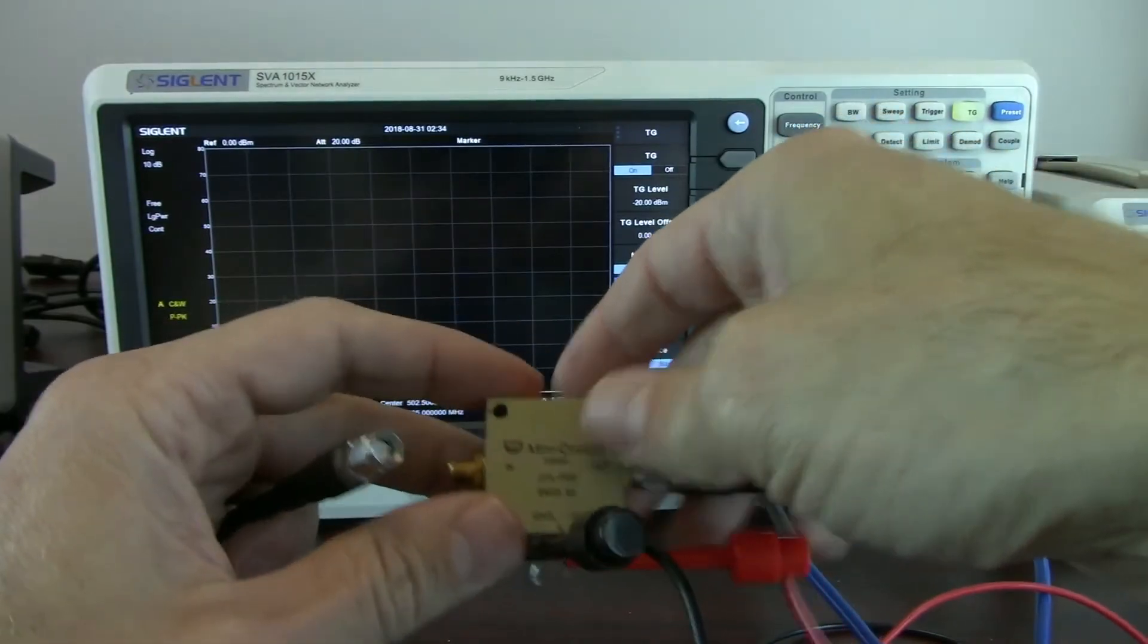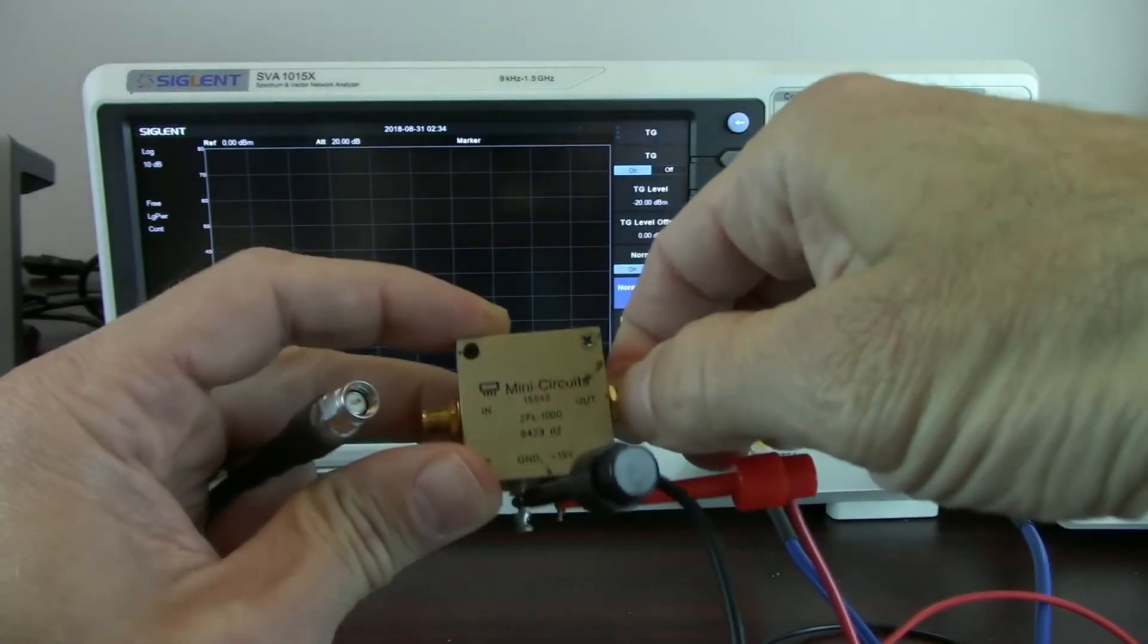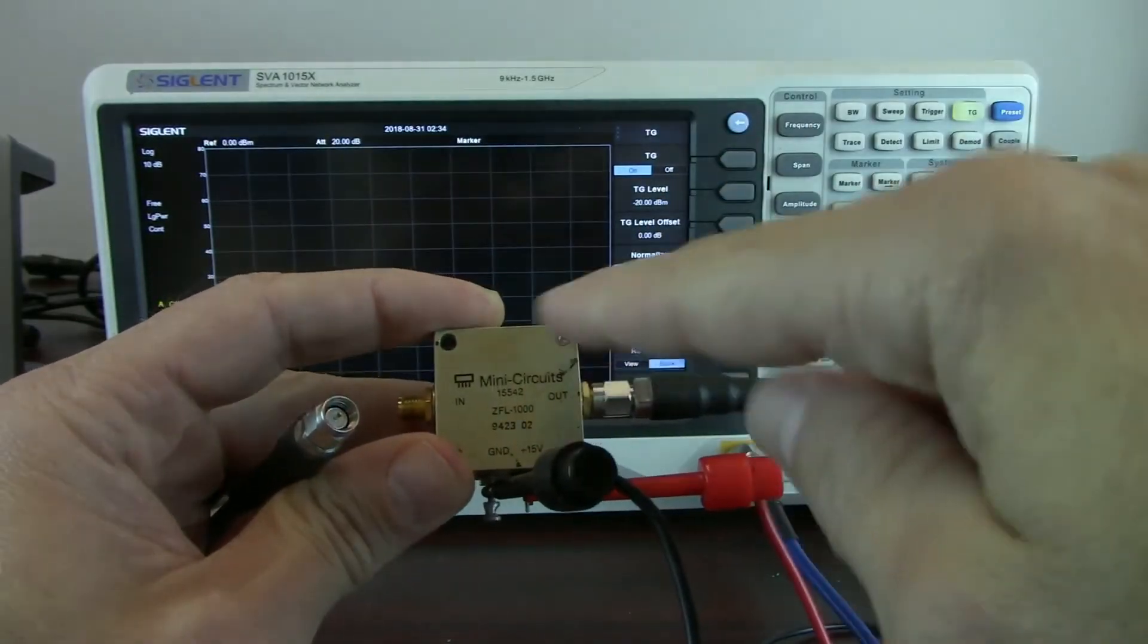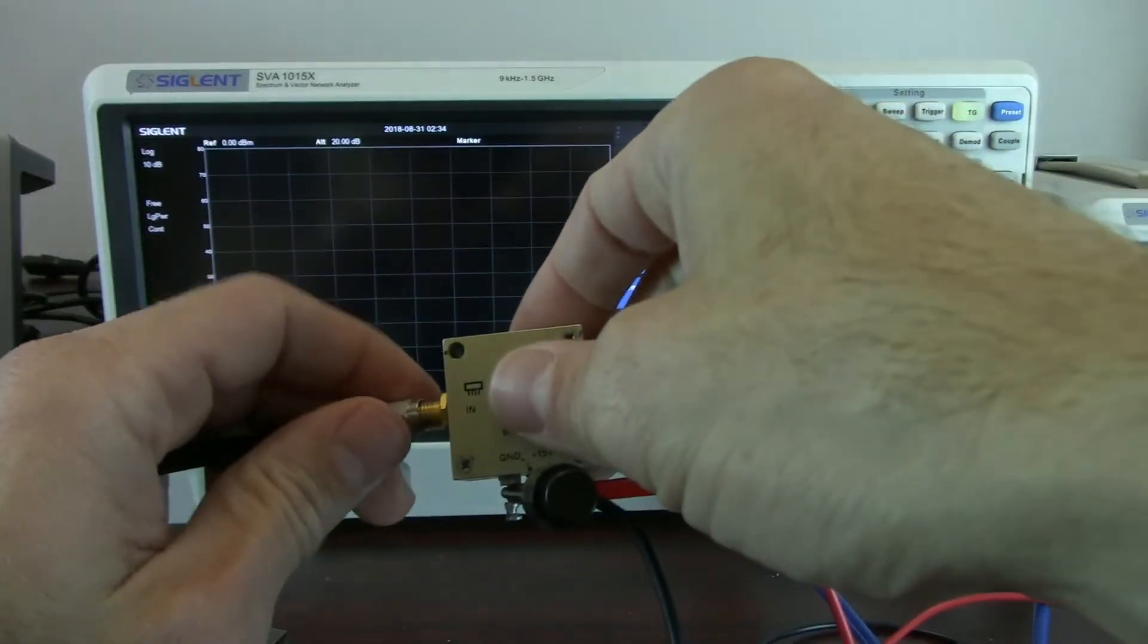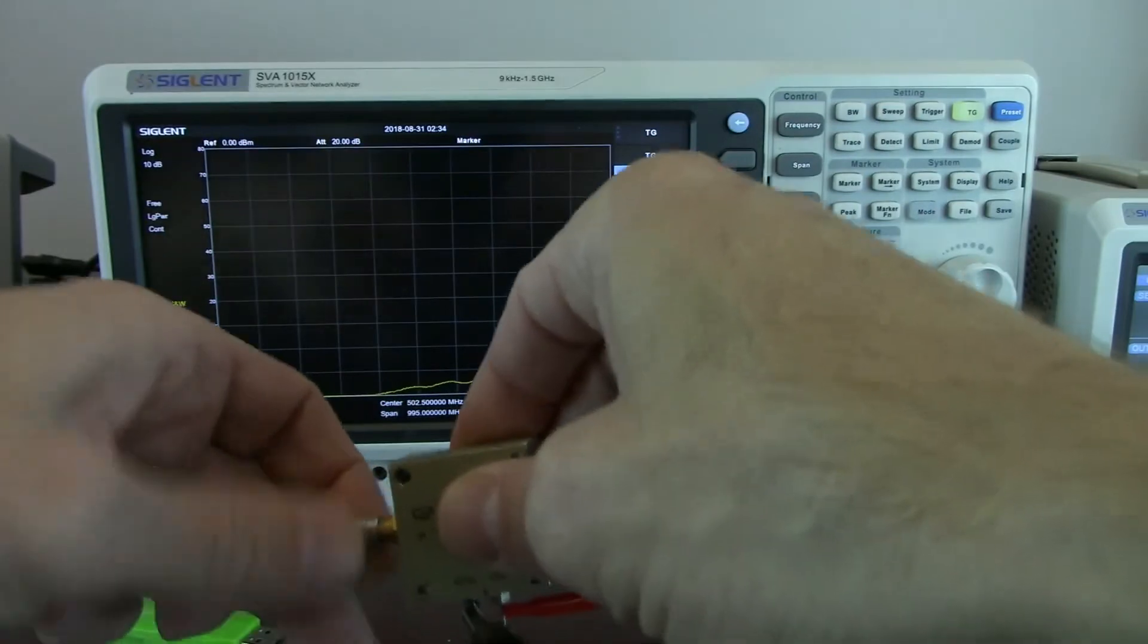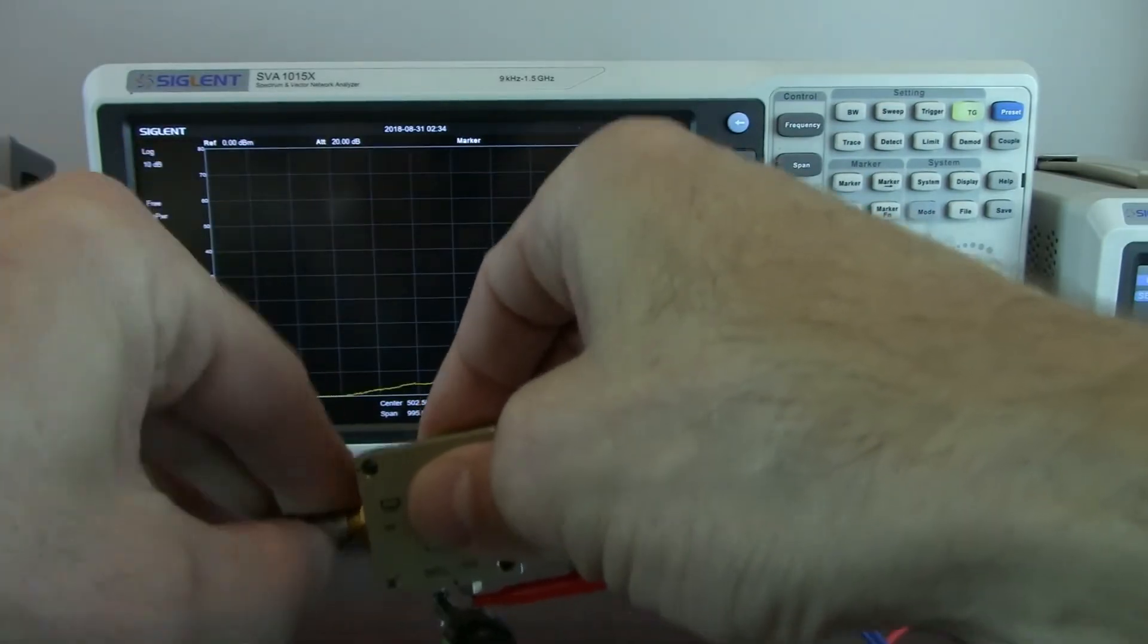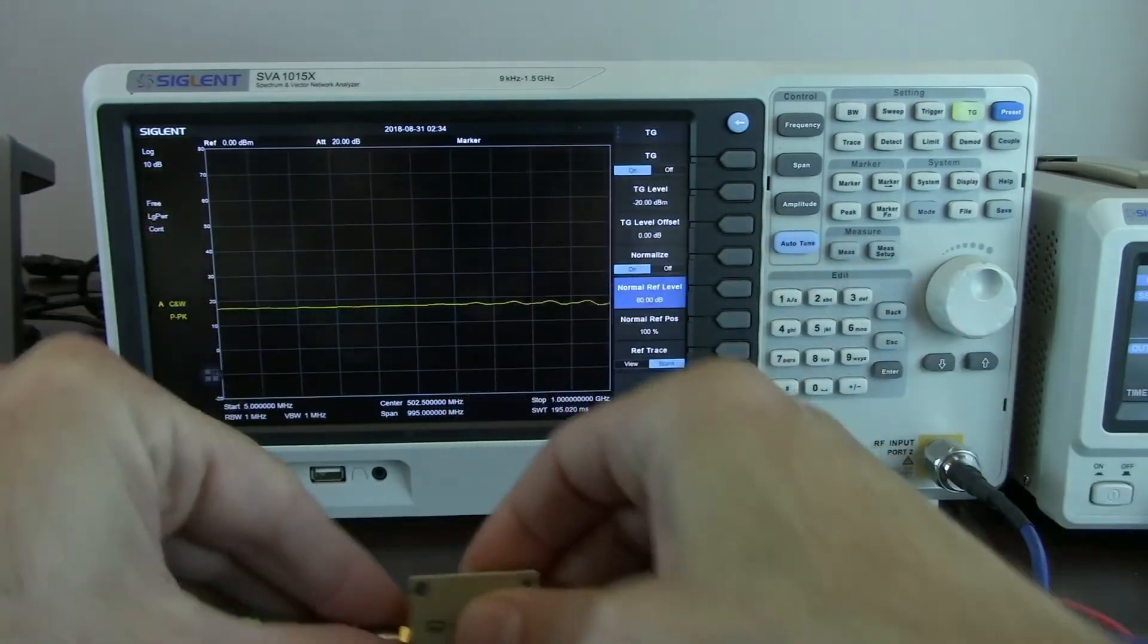Now I can turn on the amplifier and connect the RF input. The sequence that I followed here is referenced from mini circuits or referred to by mini circuits. They say connect the RF output, connect the DC voltage, and then connect the RF in. So that's the sequence of events that I'm following here. So I'm just going to connect that tracking generator input.